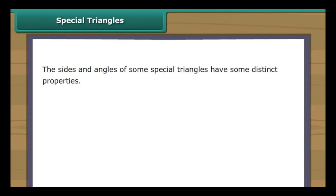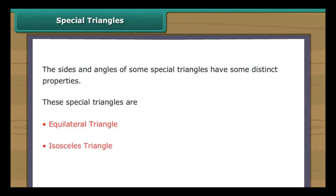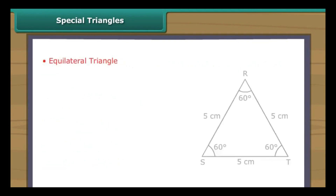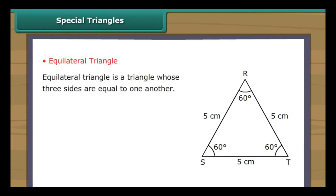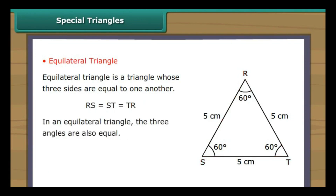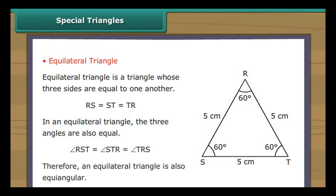Special triangles have distinct properties. These are: equilateral, isosceles, and right-angled triangles. An equilateral triangle is one whose three sides are all equal — in triangle RST, RS equals ST equals TR. In an equilateral triangle, the three angles are also equal: angle RST equals angle STR equals angle TRS. Therefore, an equilateral triangle is also equiangular.